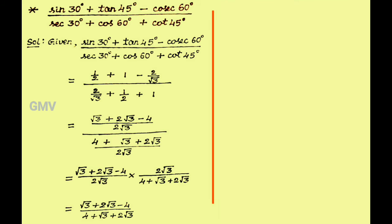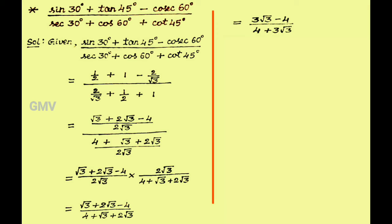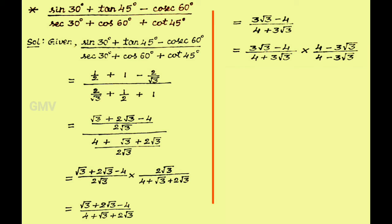In the numerator, root 3 and 2 root 3 are like terms, so we can add them easily. In the numerator we get 3 root 3 minus 4. In the denominator also root 3 and 2 root 3 are like terms, so in the denominator we get 4 plus 3 root 3. Now we have to rationalize the denominator, which we have already studied in the ninth standard. In the denominator 4 plus 3 root 3 is present, and its rationalizing factor (RF) is 4 minus 3 root 3. So we have to multiply and divide this by 4 minus 3 root 3.